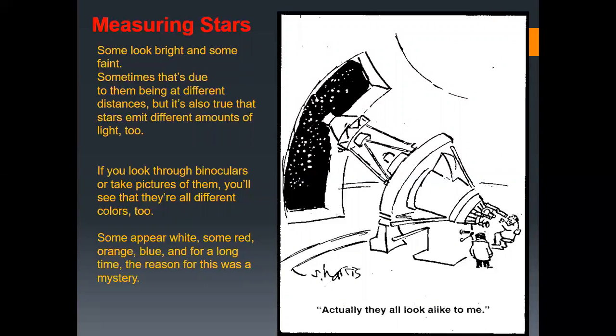Some stars appear white, some red in color, some are orange, even blue. And for a long time, the reason for this was a mystery — we didn't know anything about having different colored stars in the sky. But now we know why.